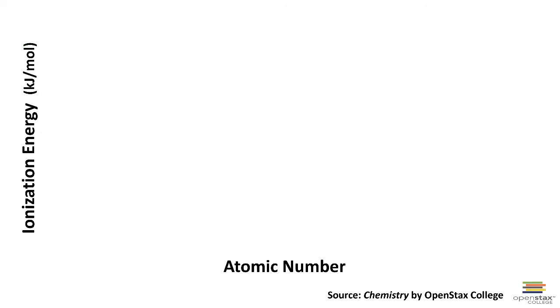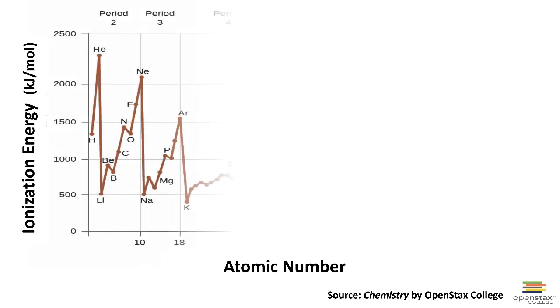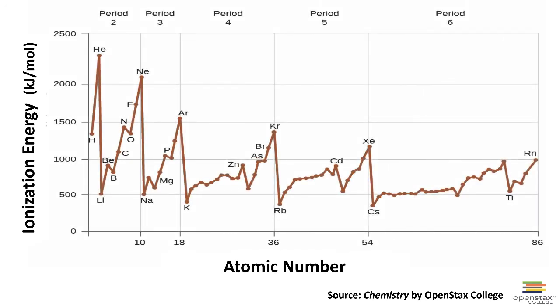If you do that, here's what a graph of ionization energy versus atomic number looks like. You very quickly note that as you go across the periodic table from low atomic number to high atomic number, we get an increase in ionization energy.